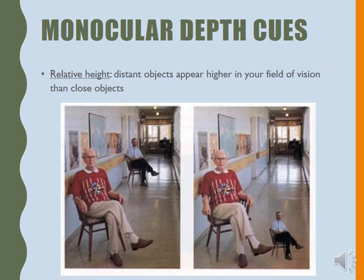Relative height — we know that if an object of known size is far away, it's smaller, but we also know it should move up in our field of vision. Here we have an older gentleman and another gentleman, and we know the gentleman with the beard is further away because if we drew lines at the feet of their chairs, his is much higher up on the screen. If we bring him down to the horizon line, he looks tiny — even tinier than in the left picture, even though it's the exact same thing. Objects that are further away move up higher in our field of vision.